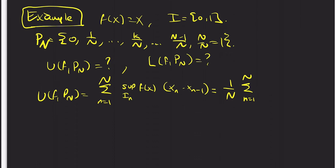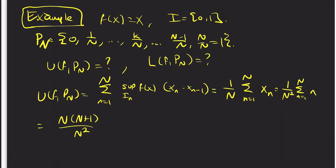The function f(x) = x is monotonically increasing, so its supremum is going to be the right endpoint of that sub-interval. That's just going to be N/N factored out already. This simplifies to N(N+1) over 2N², using the standard formula that the sum from 1 to N of k equals N(N+1)/2. So that is what U(F, P_N) is equal to. We're going to hold on to this for now.